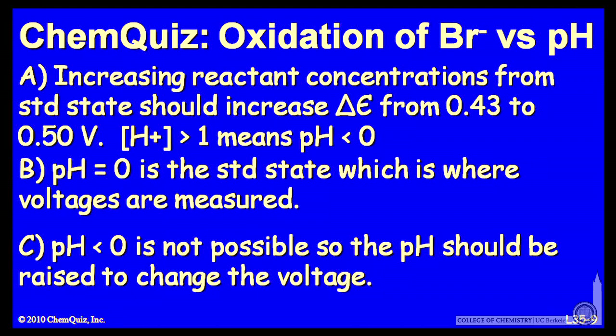Let's look at a possible explanation for each answer. A, increasing the reactant concentrations from the standard state should increase delta E, in this case from 0.43 to 0.50. So an H plus concentration of greater than 1 means a pH less than 0. B, a pH equal to 0 is the standard state, which is where voltages are measured.